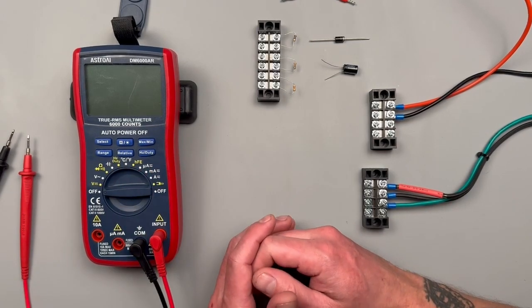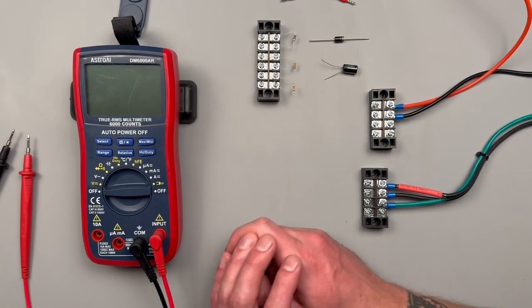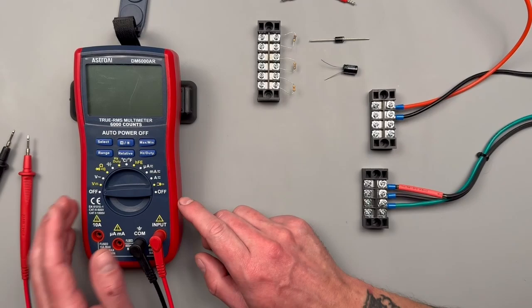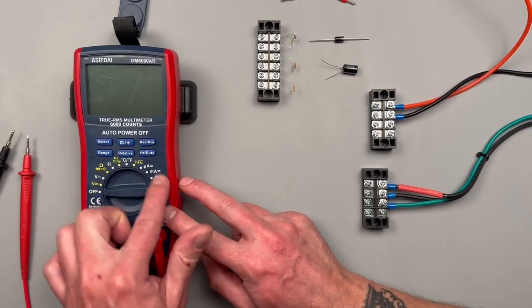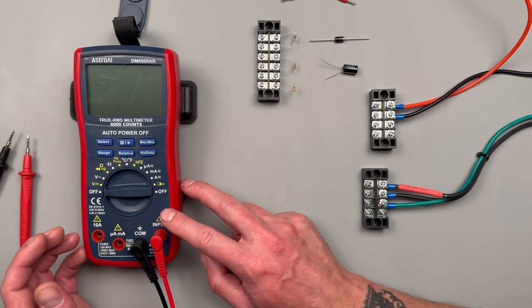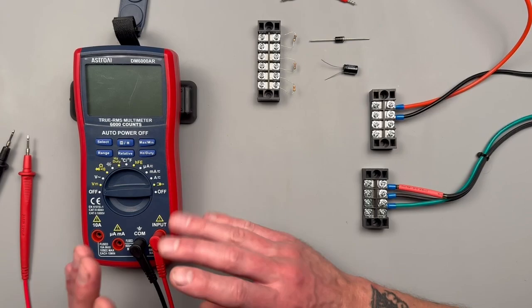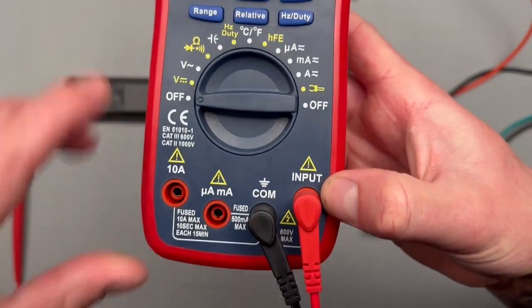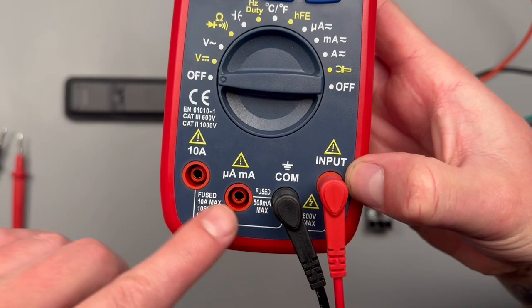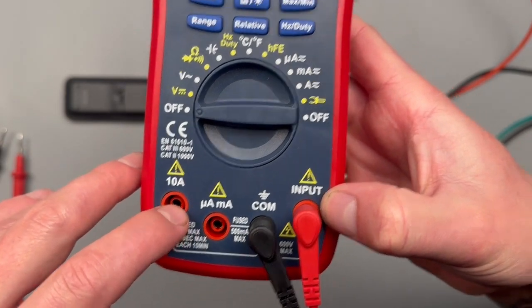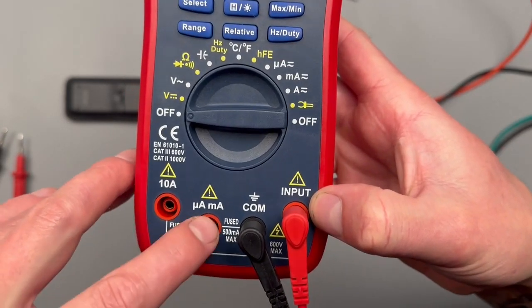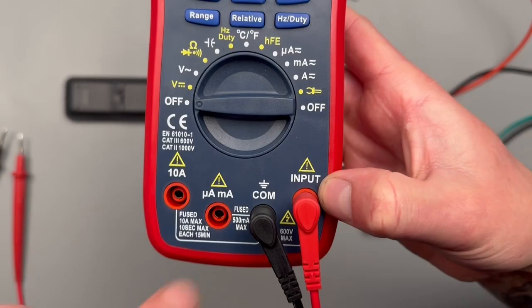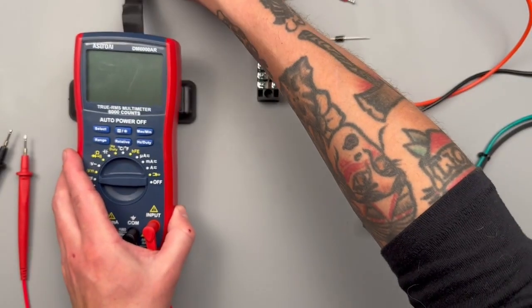These blue buttons here at the top, we'll go through those as they apply to the necessary settings. A couple things to look out for when you're first getting set up with your meter: for most of these settings, your red lead will be on input, black lead on common, and then these two are going to be for taking amperage measurements.